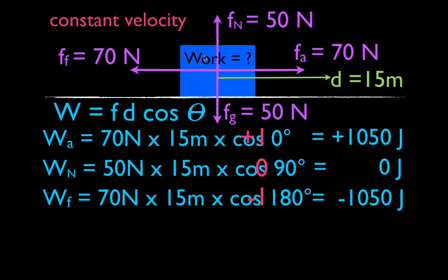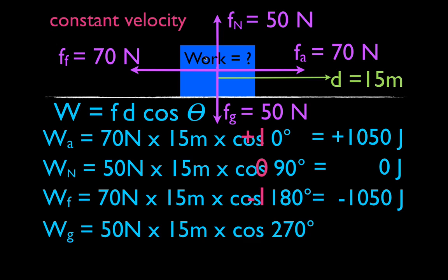The last force is gravitational. The gravitational force points downward — you could measure the angle as 270 degrees, or equivalently 90 degrees from the displacement. The cosine of 270 degrees is zero, so it's 50 times 15 times zero — the gravitational force is doing zero joules of work. This doesn't mean there is no force; it just means no component of that force is in the direction of motion. If the object were falling downward, gravity would be doing work, but not here.